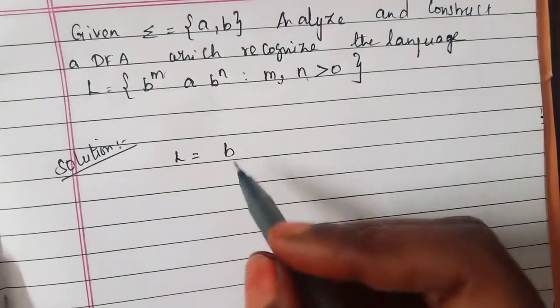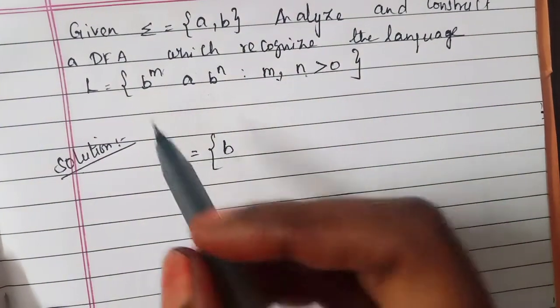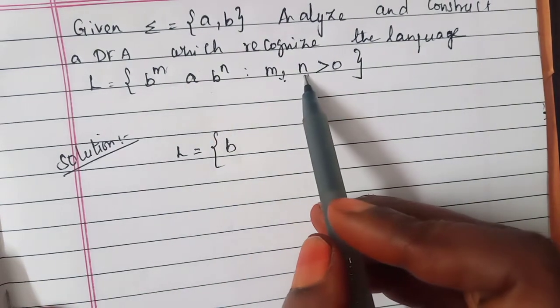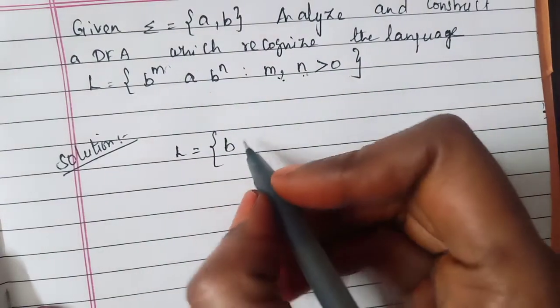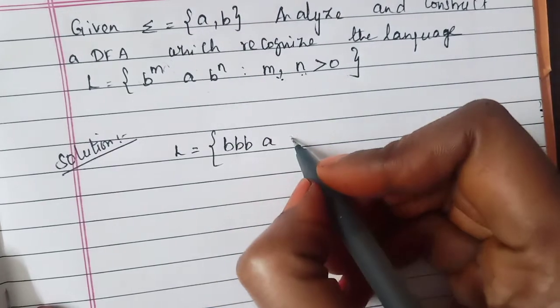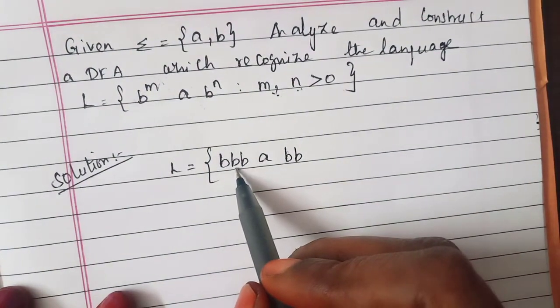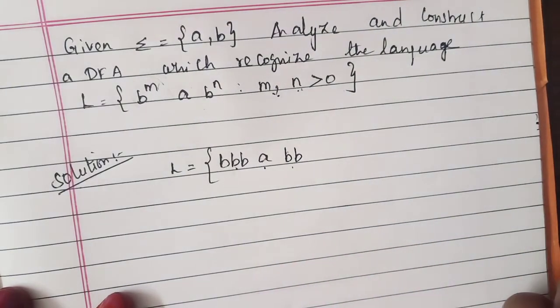For this we need to develop a language for this. Here they are saying m and n is greater than 0. So b can be any number of b's and you are having an a and it is followed by any number of b's.